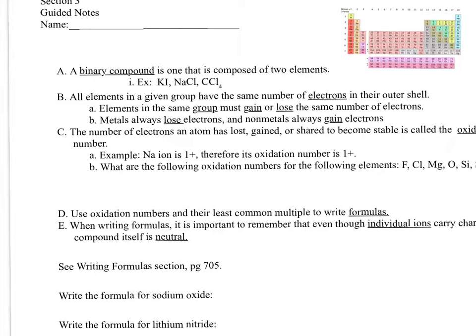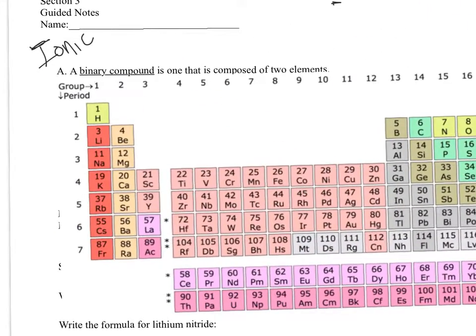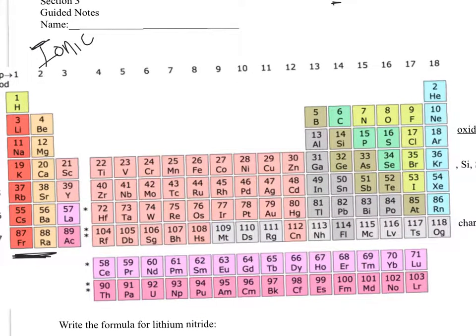What we're going to get into with this video is writing and naming compounds, and we're going to specifically focus on ionic compounds. An ionic compound is between a metal and a non-metal. If we pull up the periodic table, it's basically elements in groups 1 and 2 bonding with elements in groups 16 and 17.